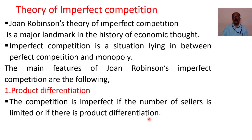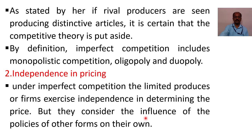Similarly, we can consider mobile handsets — brands like LG and Samsung represent product differentiation. As stated by Robinson, if rival producers are producing distinctive articles, it is certain that the competitive theory is put aside. By definition, imperfect competition includes monopolistic competition, oligopoly, and duopoly.